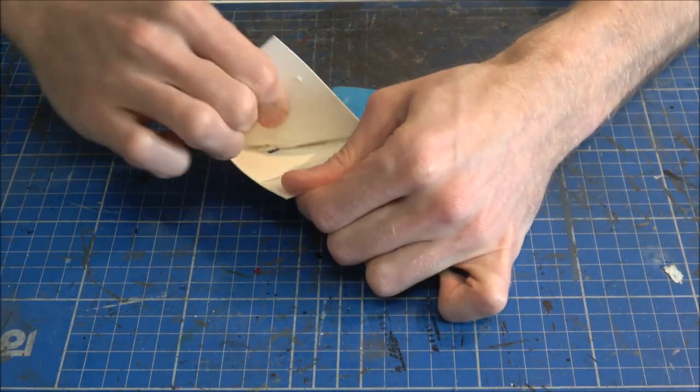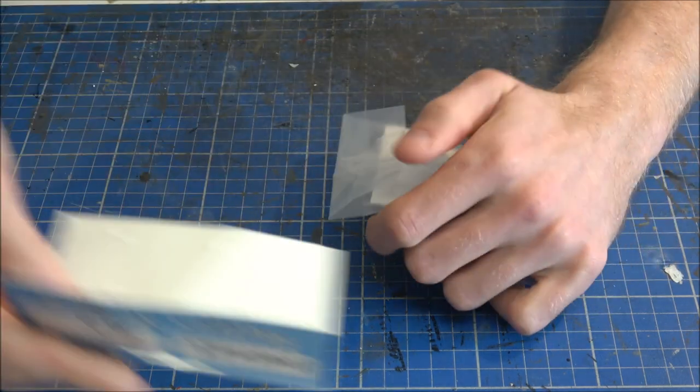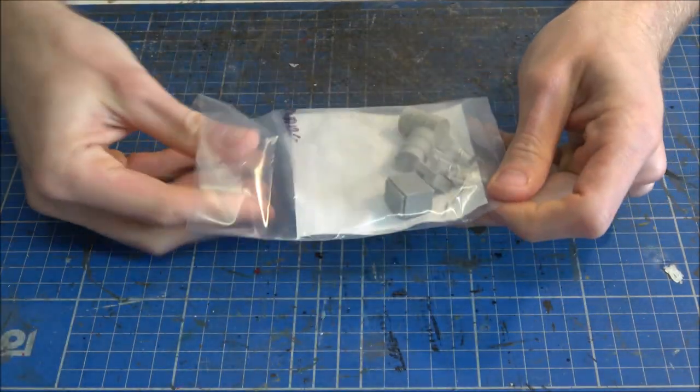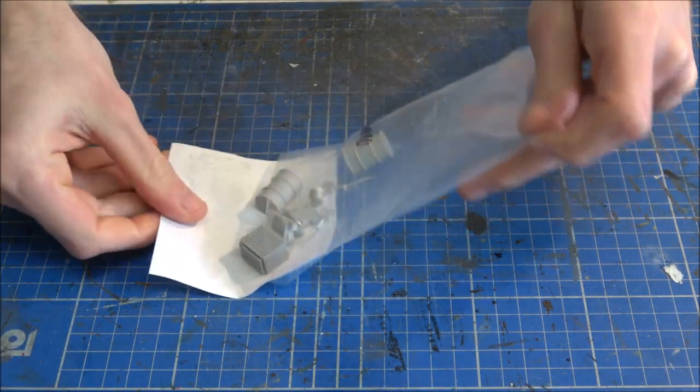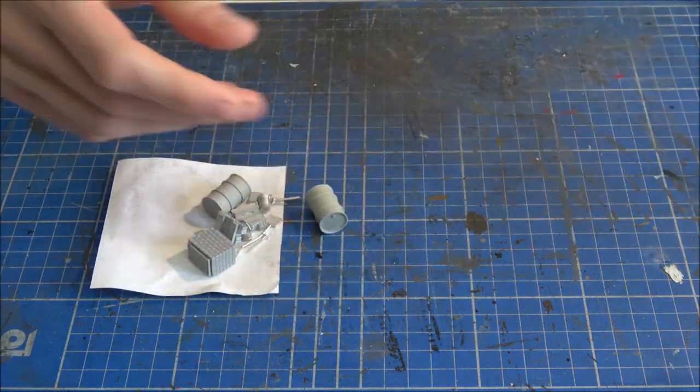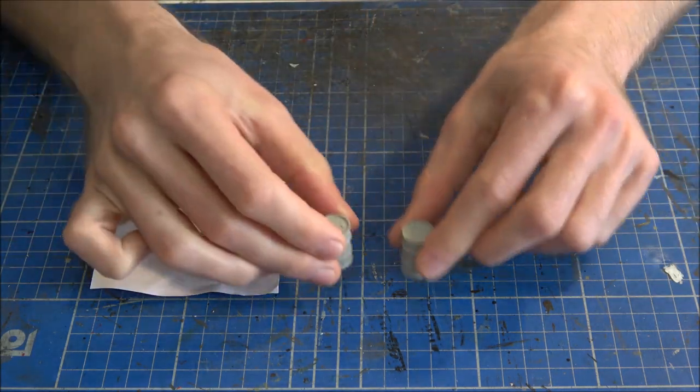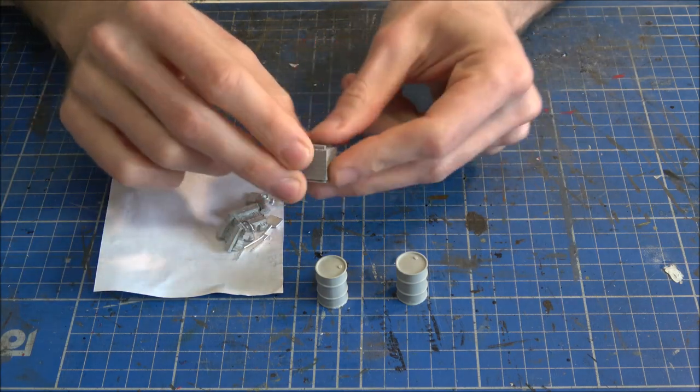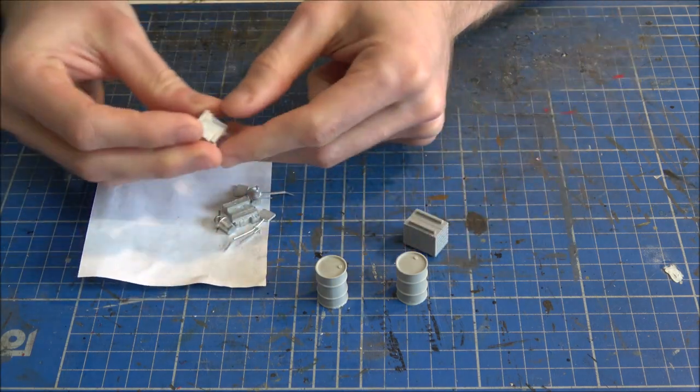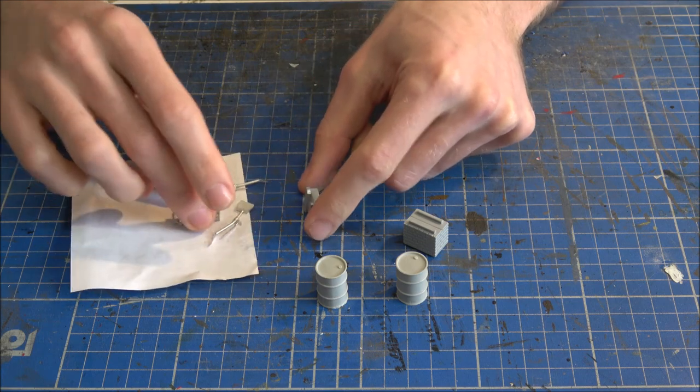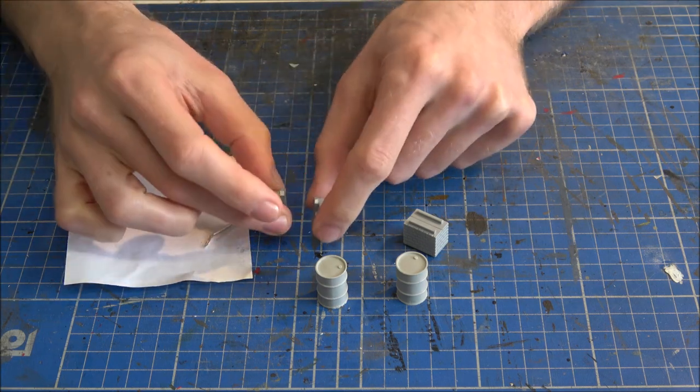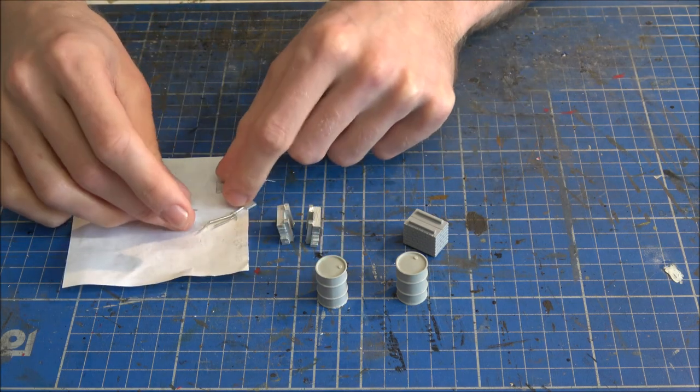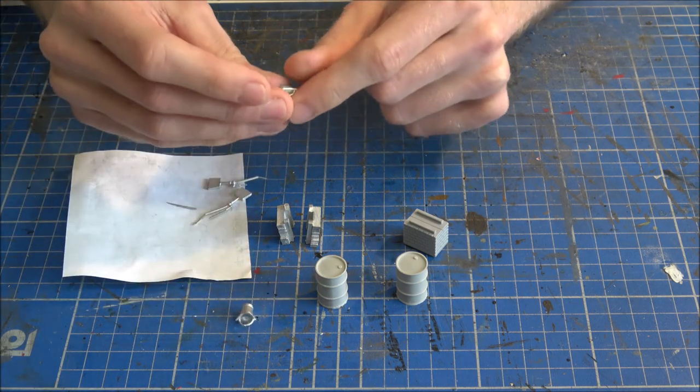As with all Skytrex kits, let's get stuck in and see what we've got in the pack. In the pack we have two oil drums, a brick base and some white metal parts which two of them make up a wooden base and we also have a couple of buckets as well. Then we've actually got the little taps as well which are on some white metal sprues.